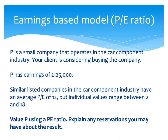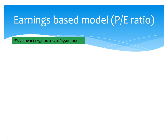For example: P is a small company in the car component industry. Your client is considering buying it. P currently has earnings of £125,000. Similar listed companies in the car component industry have an average PE of 12, with individual values ranging between 2 and 18. Using the average PE of 12, P's value comes out at £1.5 million.